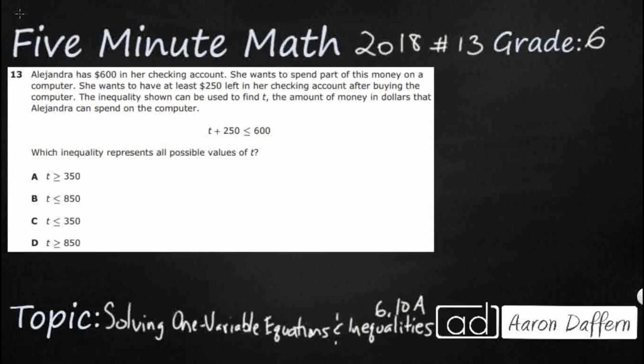So Alejandra has $600 in her checking account, so that's going to be right there in our equation. She wants to spend part of this money on a computer, and then she wants to have at least $250 left. So this T, that's going to be our computer. I'm going to put CPU right there.